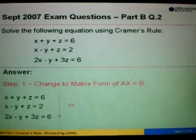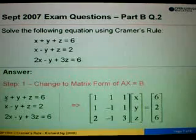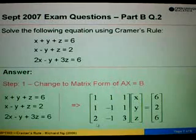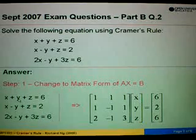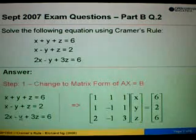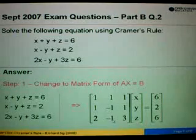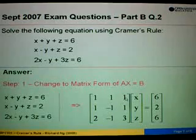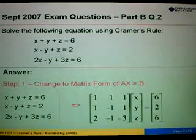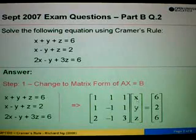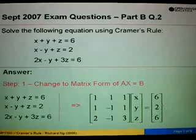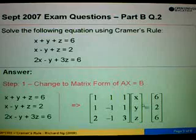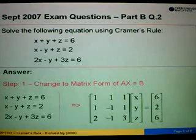From here, we take out all the multiples of X, which are 1, 1, 2, so we write down 1, 1, 2. Then followed by the multiples of Y: positive 1, negative 1, and negative 1. Then followed by multiples of Z, which are 1, 1, 3. Then we multiply the matrix X, Y, Z equals to 6, 2, 6. So A will be this 3×3 matrix, and 6, 2, 6 is matrix B.